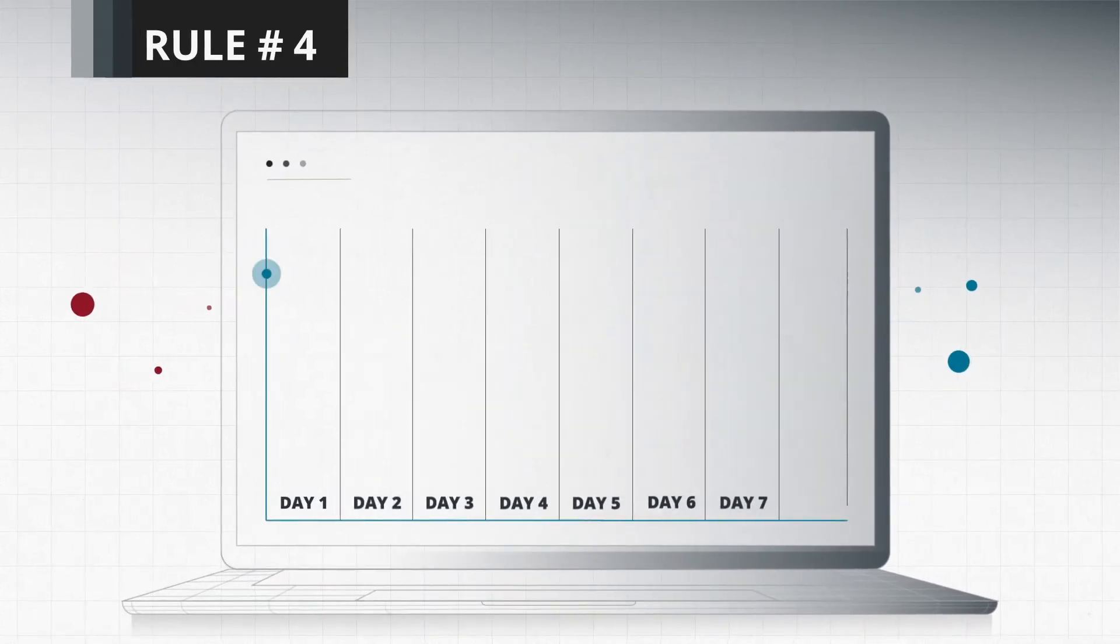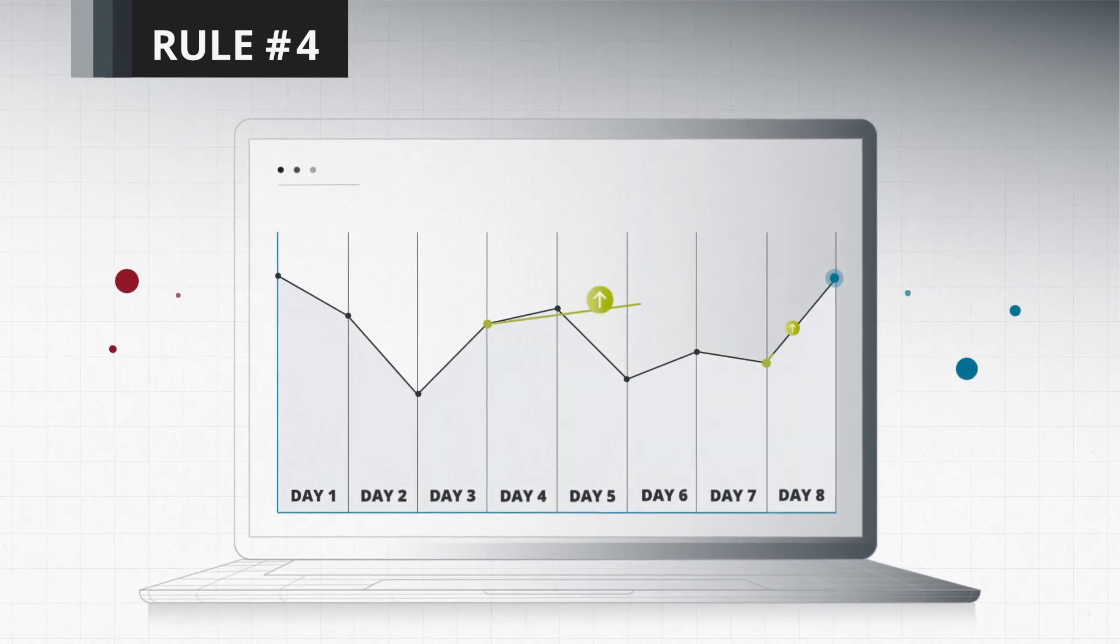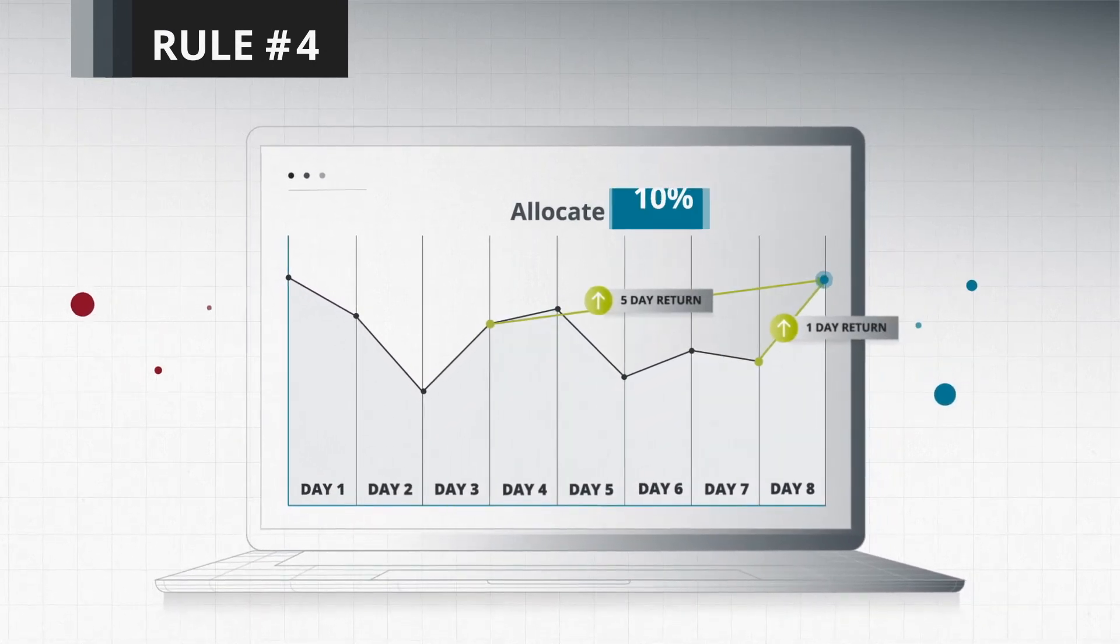Rule 4: If the previous 1-day and 5-day returns are positive, allocate 50% exposure.